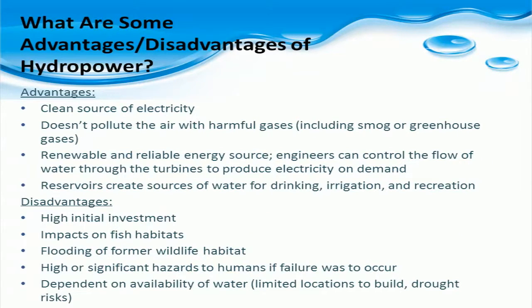An obvious major advantage to hydropower is that there are no harmful emissions as in fossil fuel combustion. Hydropower is also a renewable and reliable energy source — as long as water is flowing, there is a continuous source of energy. The reservoirs also provide recreation and can be used as a source of water for drinking or irrigation purposes. Disadvantages include a high capital investment to build the plant facilities, impacts on fish habitats, a significant hazard to humans if failure were to occur, drought risk on water availability, and the flooding of former wildlife habitats.